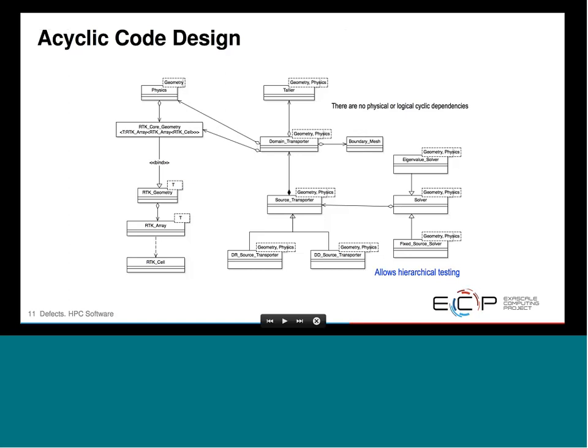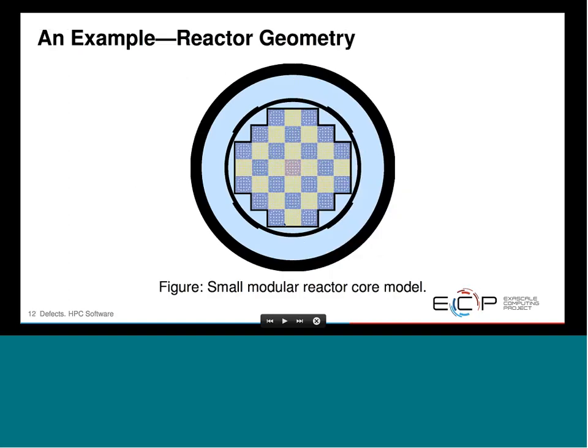Now in the spirit of real-world examples, let me bring up one. A lot of the applications we do involve computational reactor engineering and reactor analysis. What we're looking at here is a top-down view of a nuclear reactor core. One of the principal physics models we do is determining the distribution of neutrons in a reactor core.